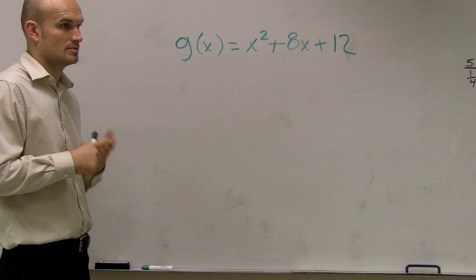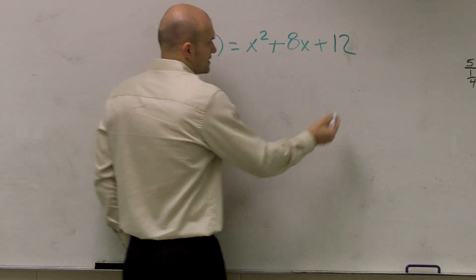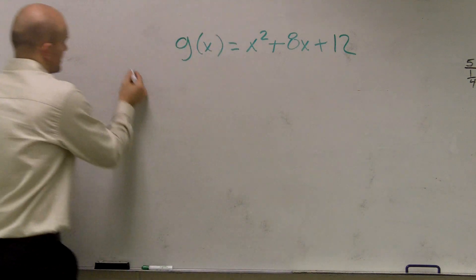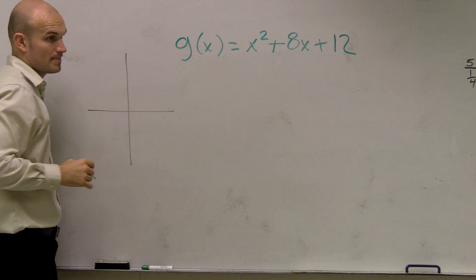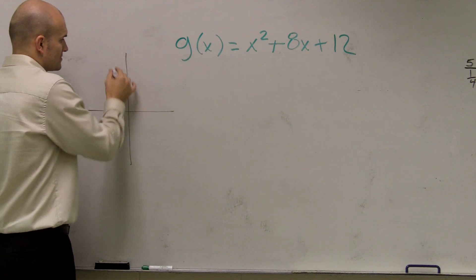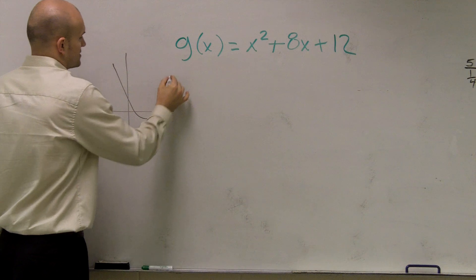Zeros and the intercepts. Let's just go ahead and take a look. I think I have extra room over here. We know this is a parabola, and we know it's going to open upward. So let's just pretend we have something that looks like this.